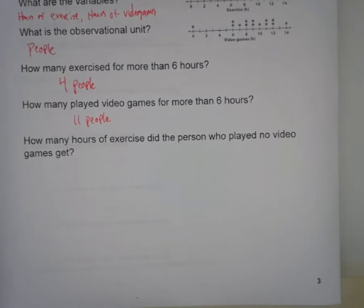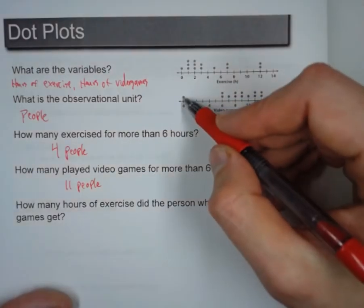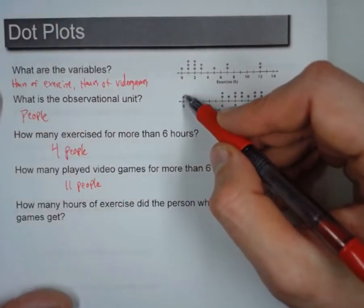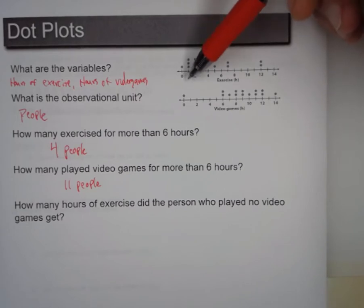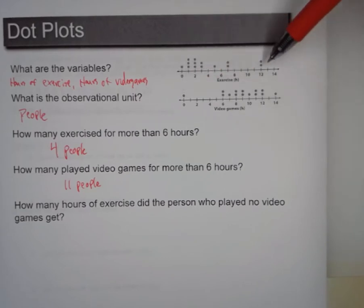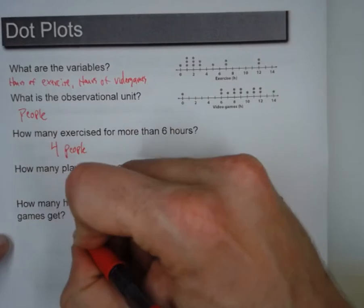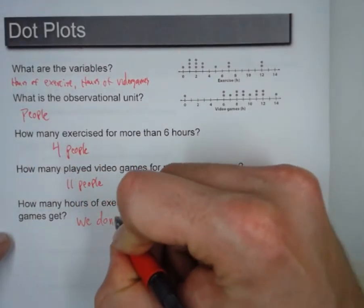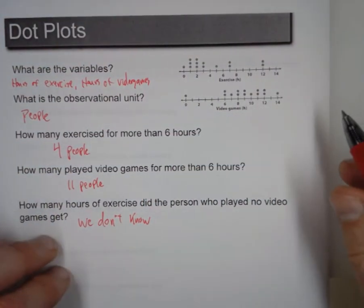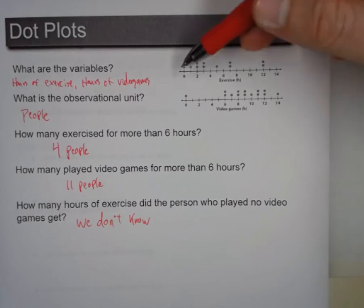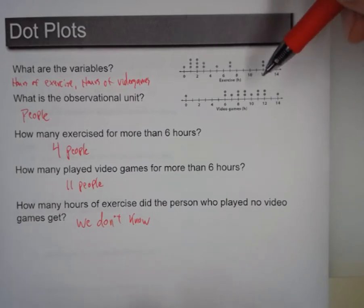Last one, how many hours of exercise did the person who played no video games get? So here we have this person who played no video games. How many hours of exercise? And the answer is, we don't know. A lot of people will try and say, well, the lowest on this dot plot has to be the lowest on this. No, it doesn't. Or some people will say if they got no video game time, then they exercised the most. We don't know that. We absolutely do not know that. So the best thing we can say is we don't know. If each dot were uniquely shaped, and then you could tell one person from another, then you could answer that question. But as it is now, they're just dots.